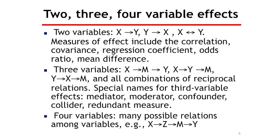Most of statistics focuses on relationships between two variables — X and Y. We could have X causes Y, Y causes X, or just correlated for some reason. Correlation coefficients, odds ratios, and regression coefficients are examples of two-variable effects. Mediation is a third variable effect — we add variable M, giving us X to M to Y. There are other names for third variable effects: moderator, confounder, collider, and redundant measure. We'll focus mainly on mediator and mention moderators.